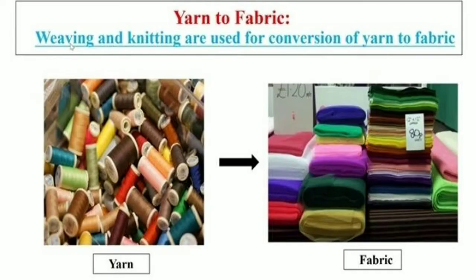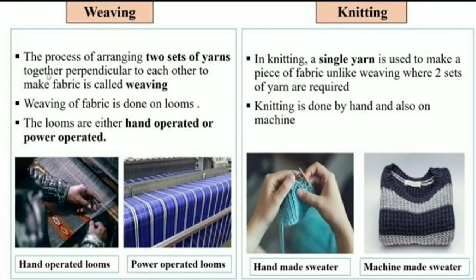Now, conversion of yarn to fabric. Weaving and knitting are the two methods used for conversion of yarn to fabric. The first is weaving — the process of arranging two sets of yarns together perpendicular to each other to make fabric is called weaving. One set of yarn is oriented horizontally and one in the vertical fashion, and this arrangement of yarns leads to the formation of fabric. Weaving of fabric is done on looms — the looms are either hand operated or power operated.